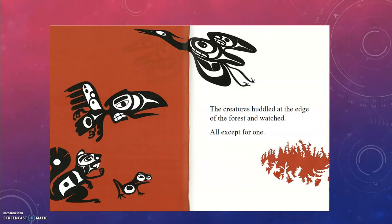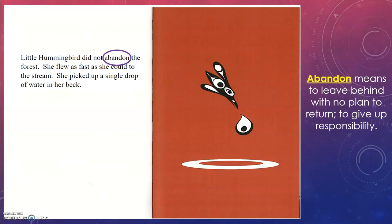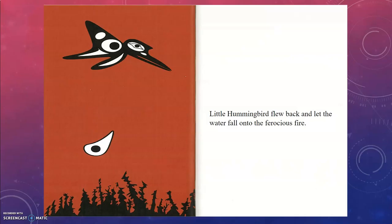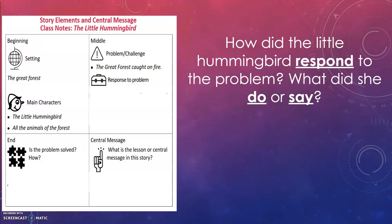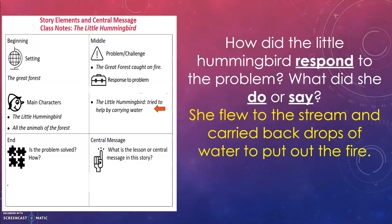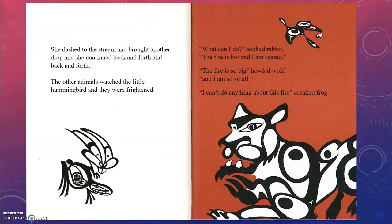The creatures huddled at the edge of the forest and watched — all except for one. Little Hummingbird did not abandon the forest. Abandon means to leave behind with no plan to return or to give up responsibility. She stayed. She flew as fast as she could to the stream, picked up a single drop of water in her beak, and flew back to let the water fall into the ferocious fire. She flew to the stream and carried back drops of water to put out the fire — she seems very brave.